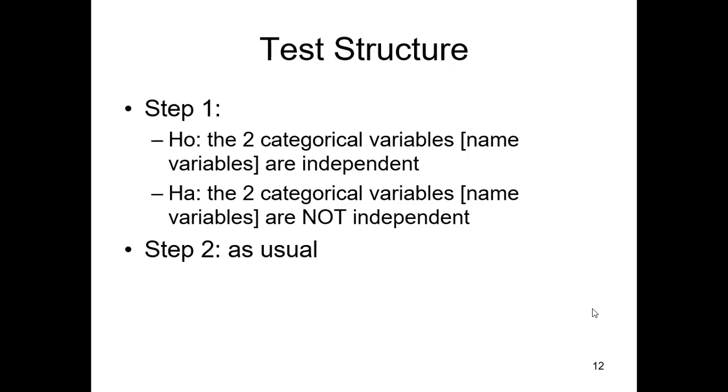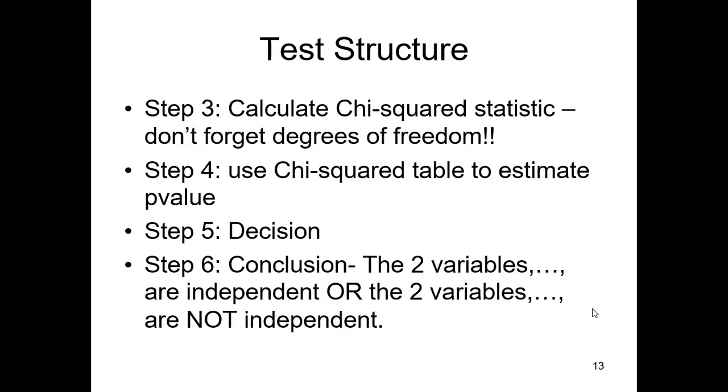To sum up, step one: H0, the two categorical variables, name them, give context to the problem, are independent versus the two categorical variables, and again name them, are not independent. Step two is as usual. Step three, calculate the test statistic, don't forget degrees of freedom, common mistake, very easy to do. Use the table or use Excel, find the p-value, make the decision, usual decision rule. And then the conclusion is the two variables, name them please, are independent or the two variables, whatever their names are, are not independent.